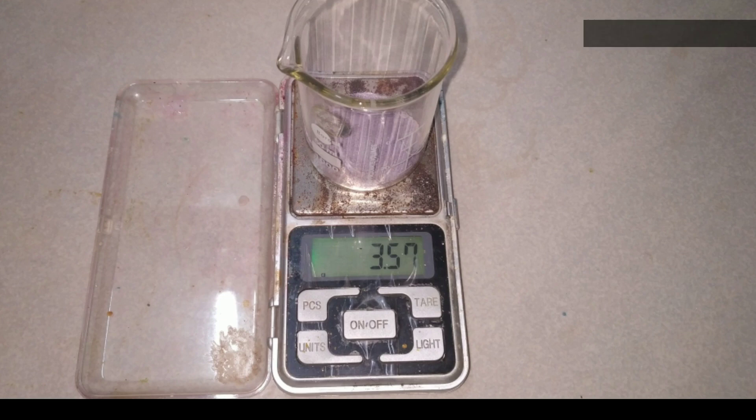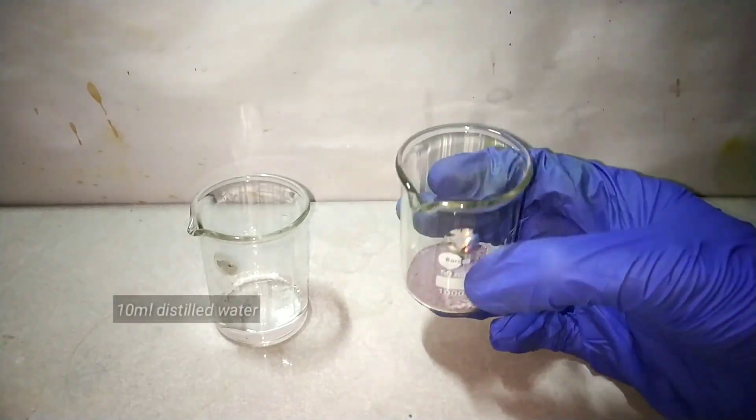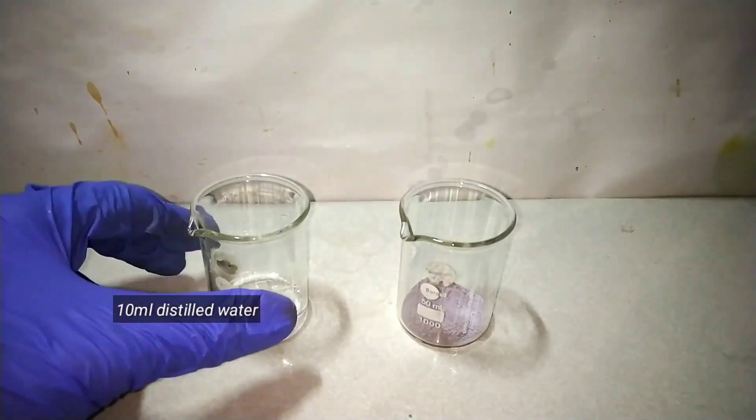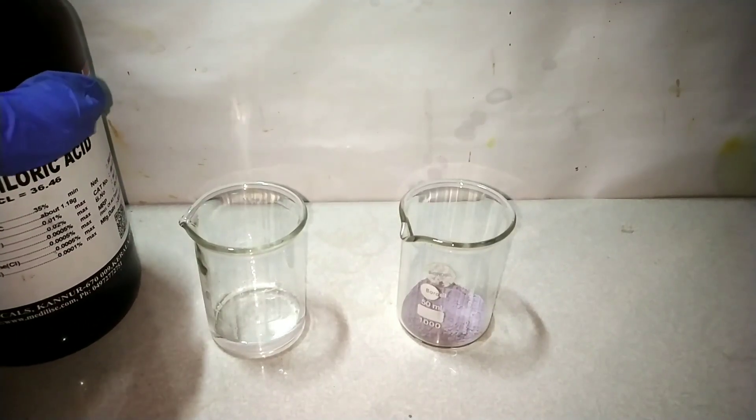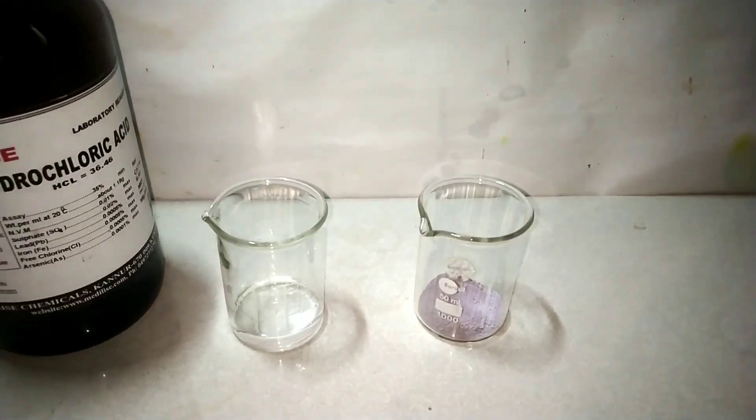Now we move on with synthesis of cobalt 2 chloride. First of all measure out 3.57 grams of cobalt carbonate in a dry beaker. So here we have the cobalt carbonate. In the other beaker we have 10 milliliters of distilled water.